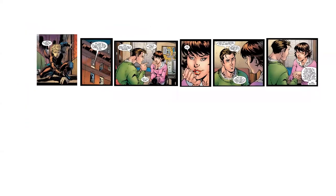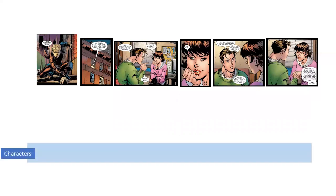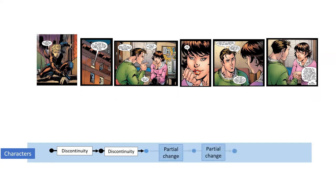Looking at characters, for the first few panels we can find some discontinuity because we change the characters we see across panels. For the next few panels, some characters are maintained — the woman occurs in every one and the man is omitted and then added again. So we have some continuity, some discontinuity, which we refer to as a partial change in characters. For the final two panels, we have the exact same two characters, which we refer to as a run of information — a string of the same information.